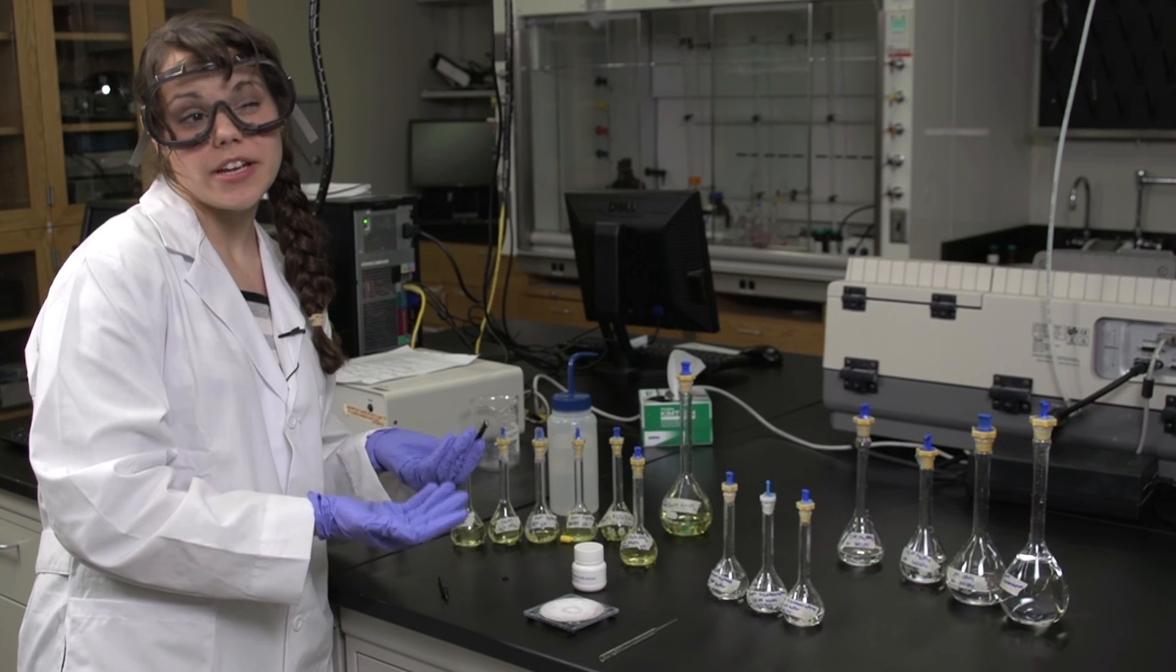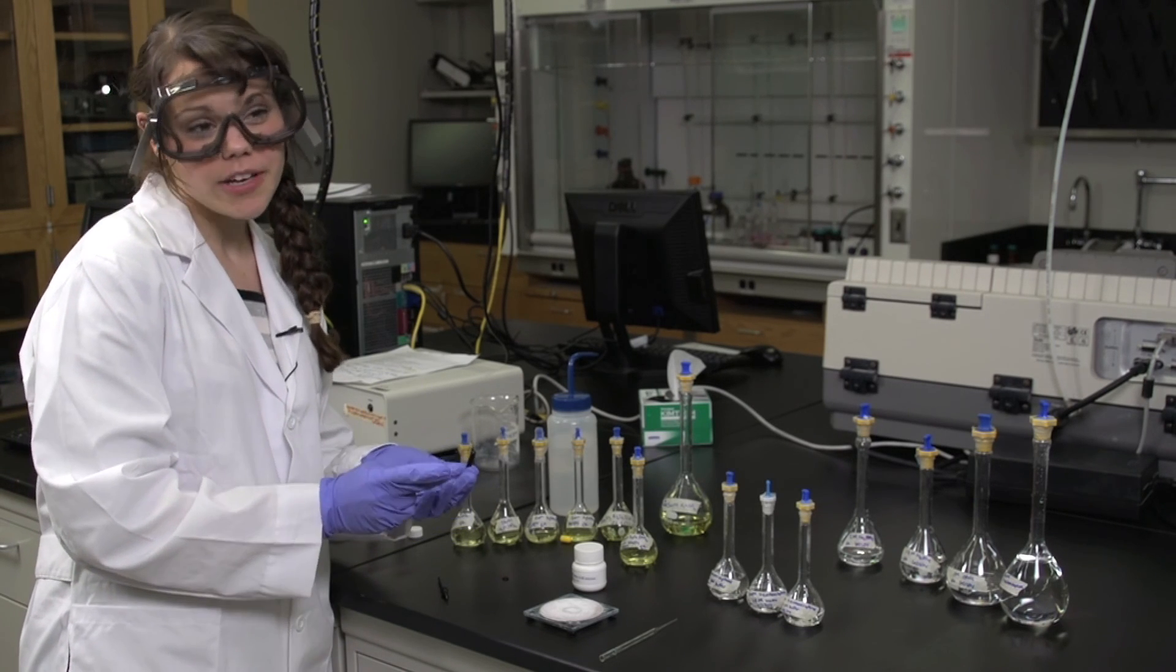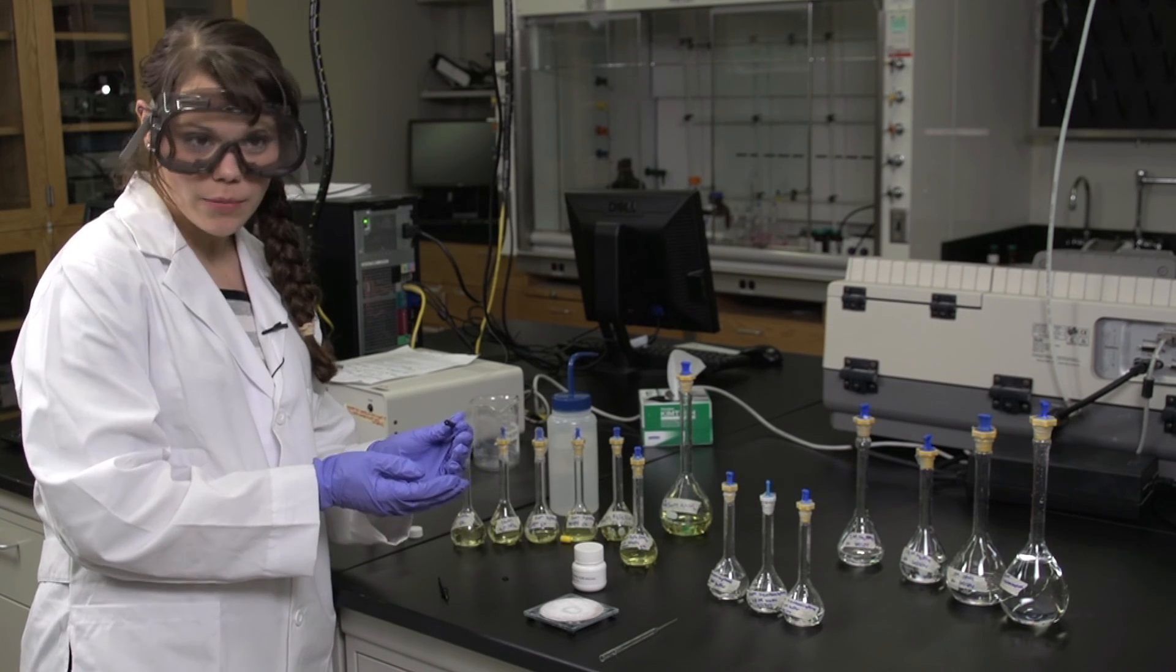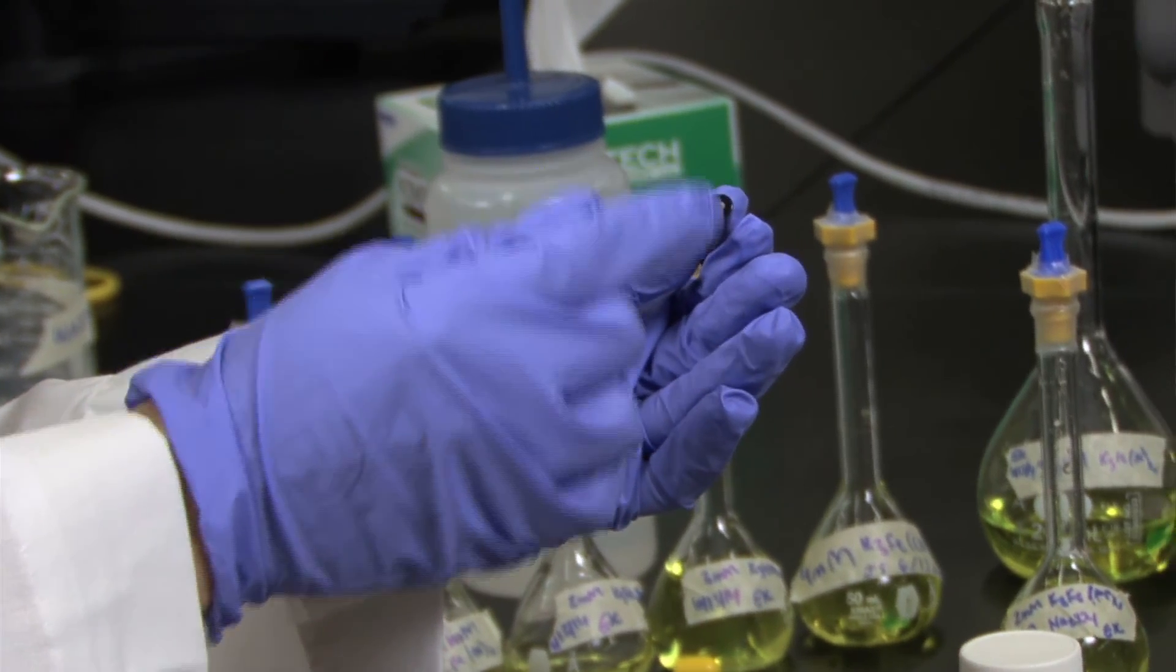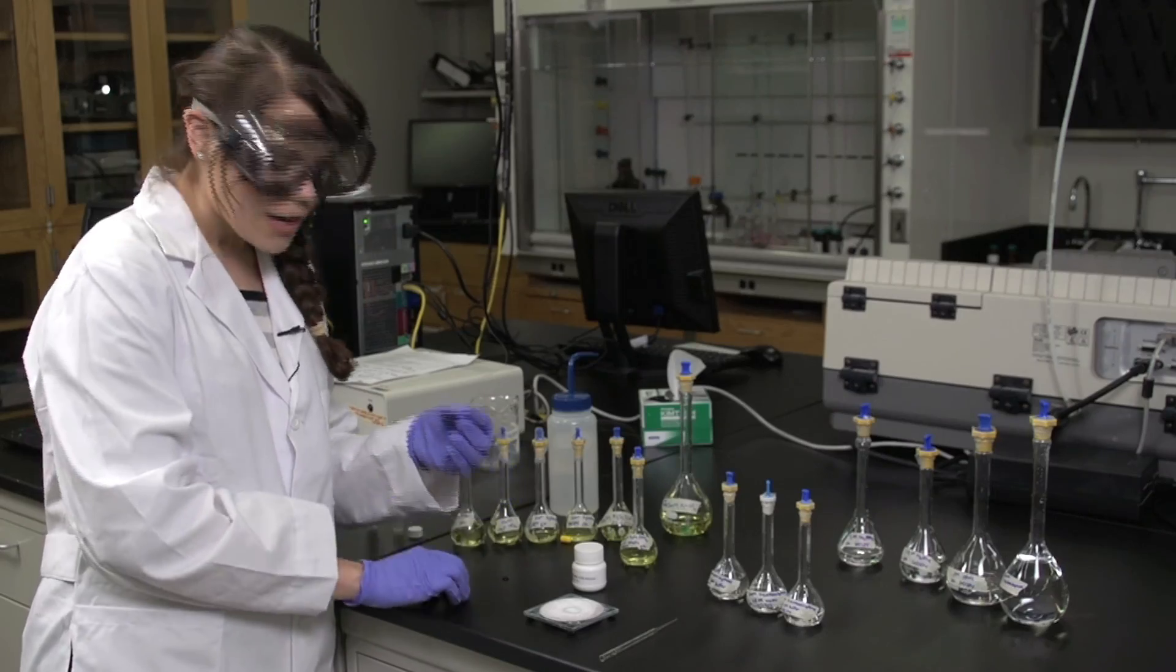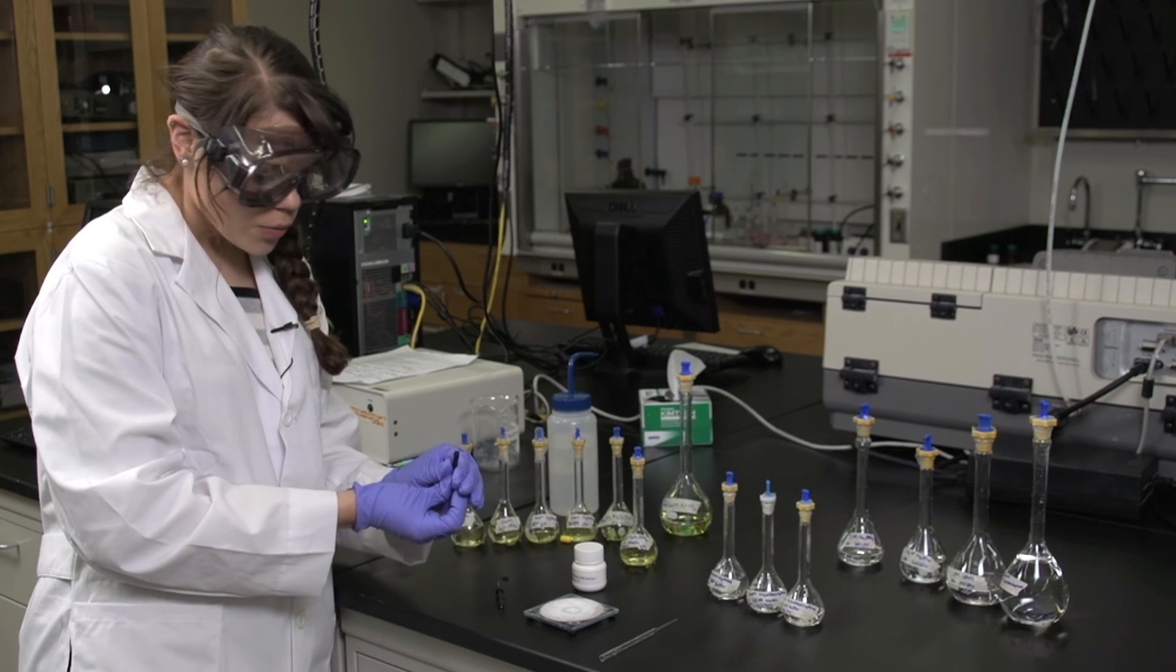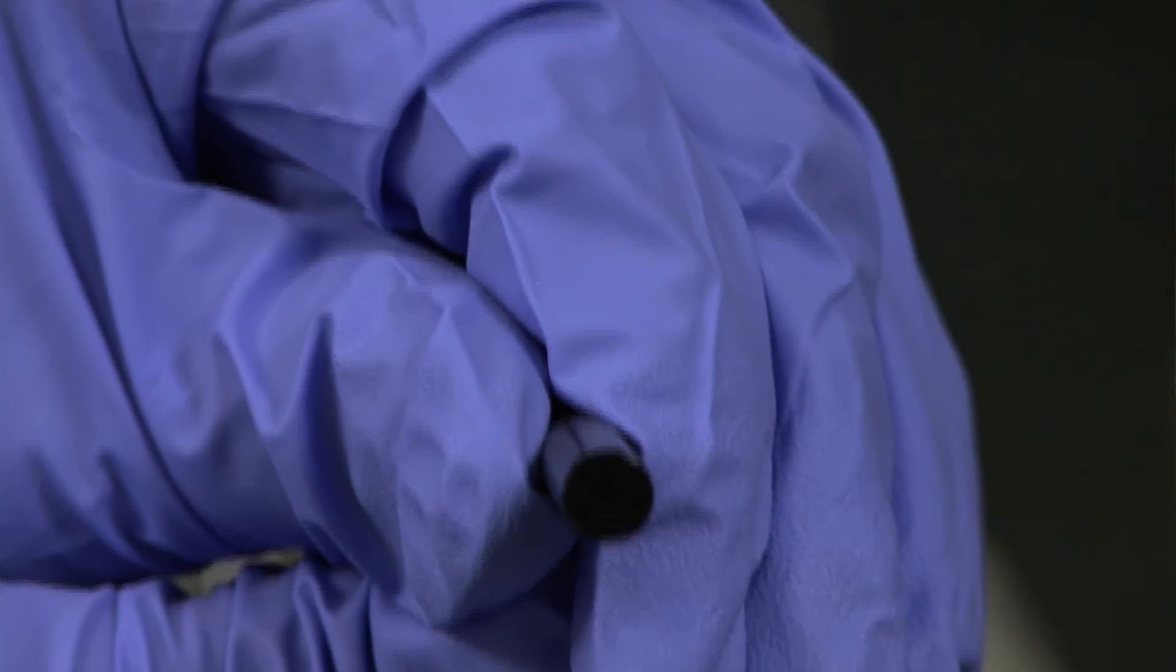Before you're ready to begin your experiment, you need to polish the working electrode. There are two working electrodes you'll be using throughout this experiment. On day one, you'll be using the platinum working electrode which has a silver shiny metal bottom. On day two, you'll be using a glassy carbon working electrode which has more of a shiny clear glass appearance.